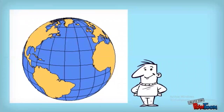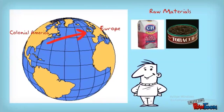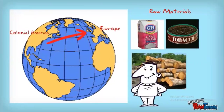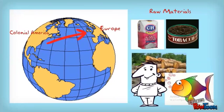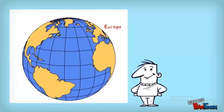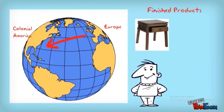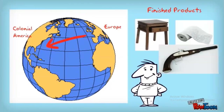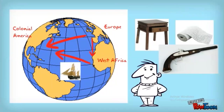Starting with colonial America: they traded things to Europe called raw materials, which included sugar, tobacco, lumber, fish oil, and so on. In return, Europe would send finished products back to America, which included furniture, cloth, guns, and so on. They would also trade these things with West Africans in exchange for slaves, whom they would ship to the Americas — thus a triangle.